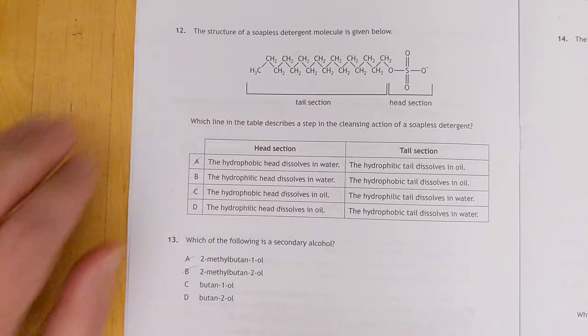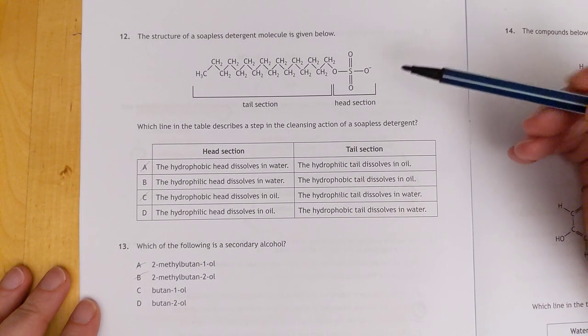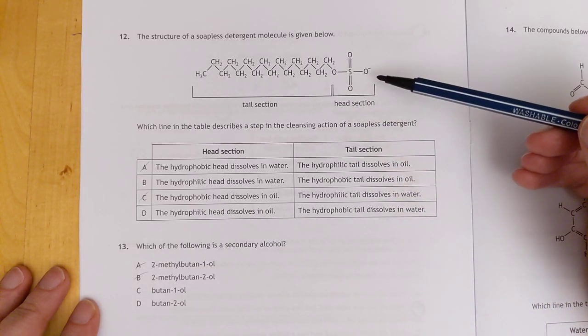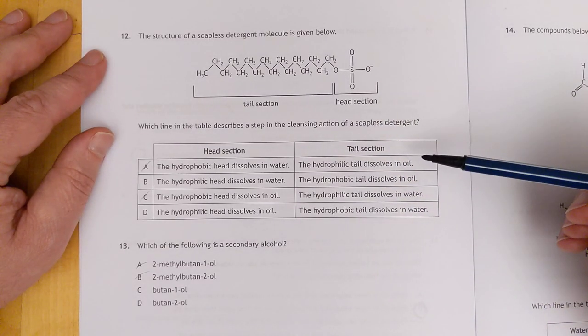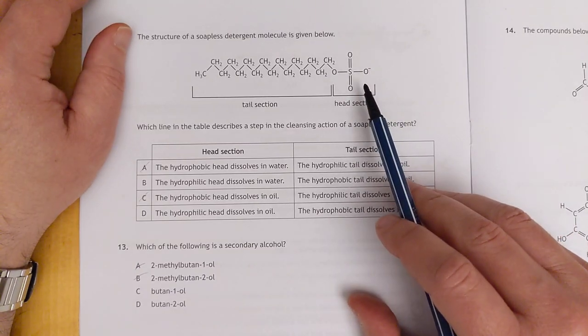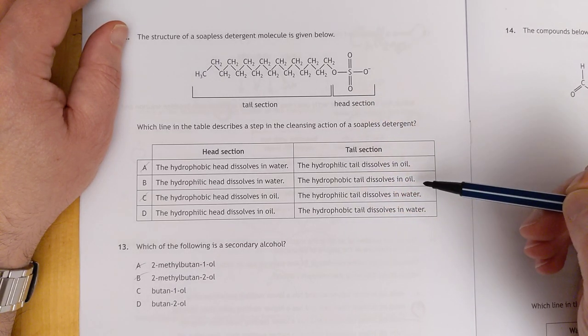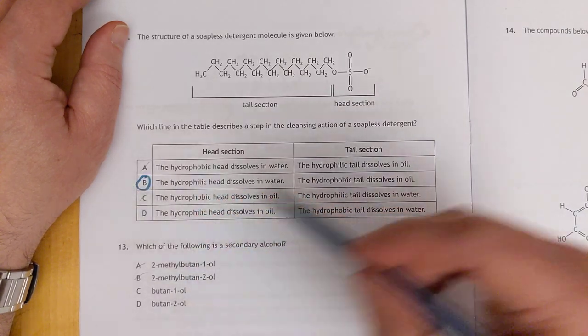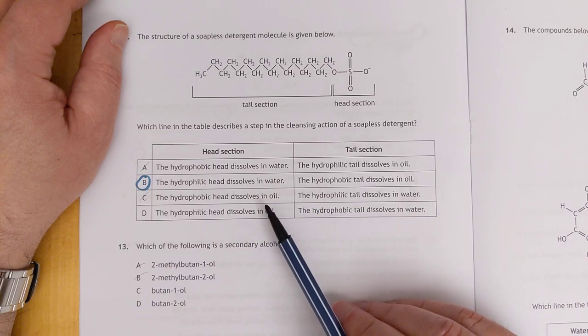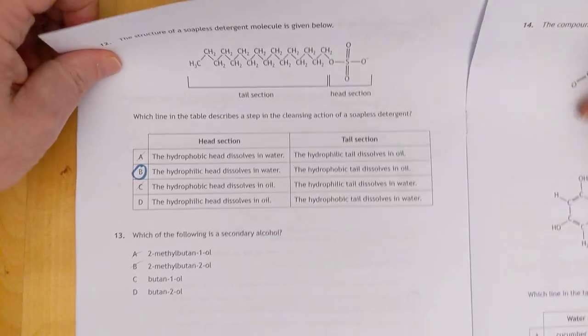Number twelve. I'm hoping you're not feeling too hopeless by now. There's a decent chance, guys. You can't remember what you put anyway for these. This is a soapless detergent molecule. Here's our big, long, non-polar bit. There's our ionic bit. Which line describes a step in the cleansing action of a soapless detergent? Well, the head is hydrophilic. It likes water. And it dissolves in the water. And the tail dissolves in the oil. So I'm looking at B. Is it as easy as that? Not as complex as it looks. Almost like a distractor here. You just have to know how soaps work.